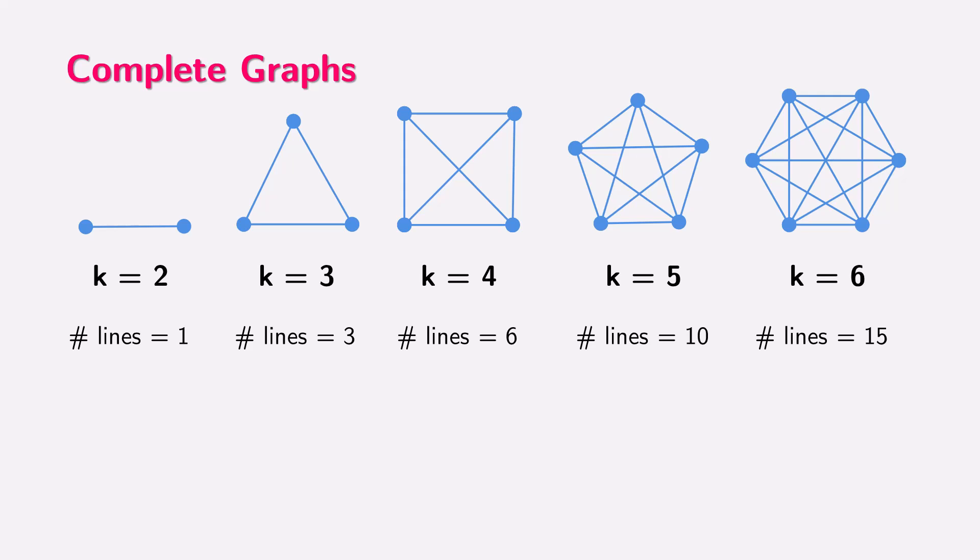Here we can see a series of complete graphs. A complete graph is a shape in which every point or vertex is connected to every other point by a line. We start with the complete graph for two points, called K2. Here we have just one line connecting the two points. Next, we have K3, the complete graph with three points. Every point connects to every other point, forming a triangle with three lines.